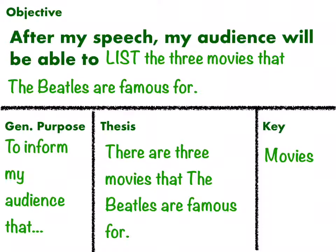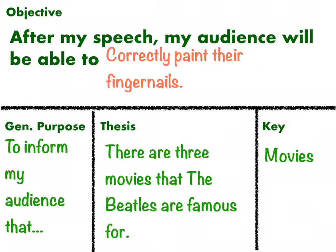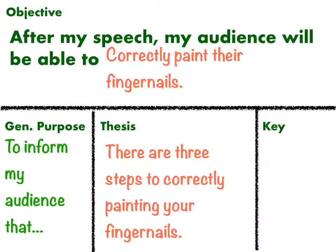Your objective will probably look like the Beatles example, but sometimes it's a little different. For instance: after my speech my audience will be able to correctly paint their fingernails, and the thesis would be: there are three steps to correctly painting your fingernails. That example is rare, but on occasion a student writes an objective and thesis like that. Also, be careful of a key word that is 'facts' or 'things' — sometimes these work, but sometimes they lead to a speech that's all over the place, so I might ask you to follow up with me on that.